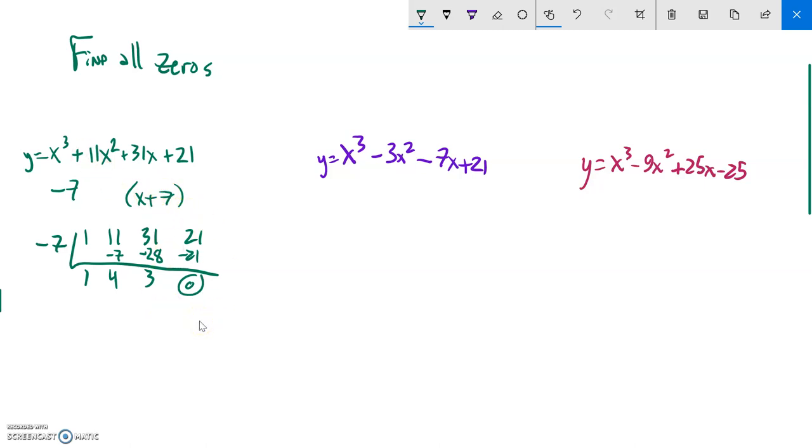So what I did, kind of factoring wise, is I took this, divided it by that. So I have x plus seven times this would be x squared plus 4x plus three.